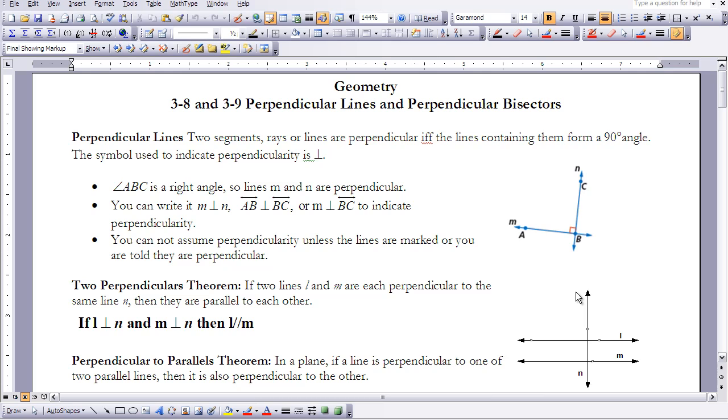Remember with your assumptions from drawings, with parallel lines you couldn't assume things were parallel, you couldn't assume angle measures. That same thing happens here. You cannot assume things are perpendicular unless they're marked, unless you see that right angle symbol.